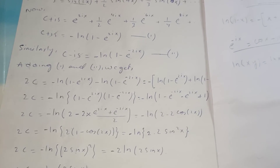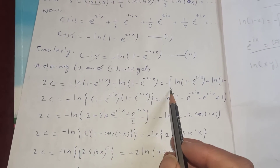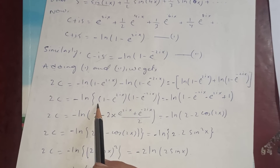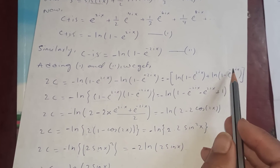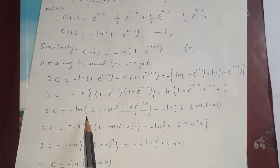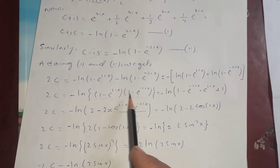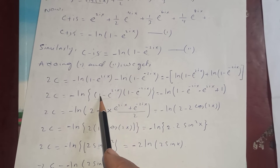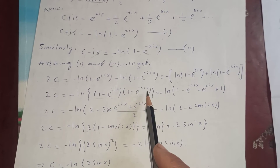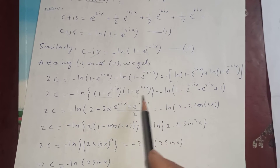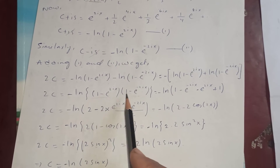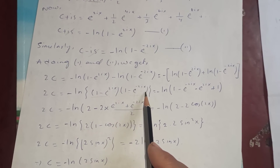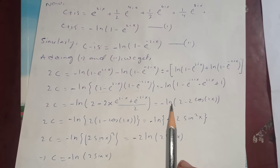Using the log property log(xy) = log(x) + log(y), we get 2C equals minus log[(1 - e^(2ix))(1 - e^(-2ix))]. Multiplying out: 1·1 minus e^(-2ix) minus e^(2ix) plus e^(2ix)·e^(-2ix), and since e^(2ix)·e^(-2ix) = 1, we get 2 - e^(2ix) - e^(-2ix).